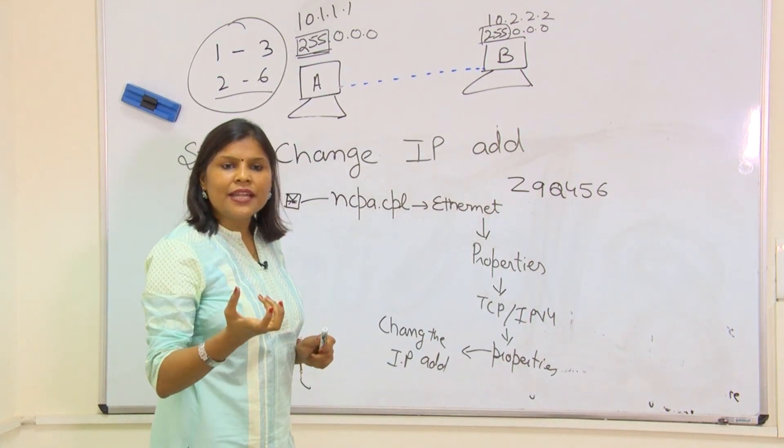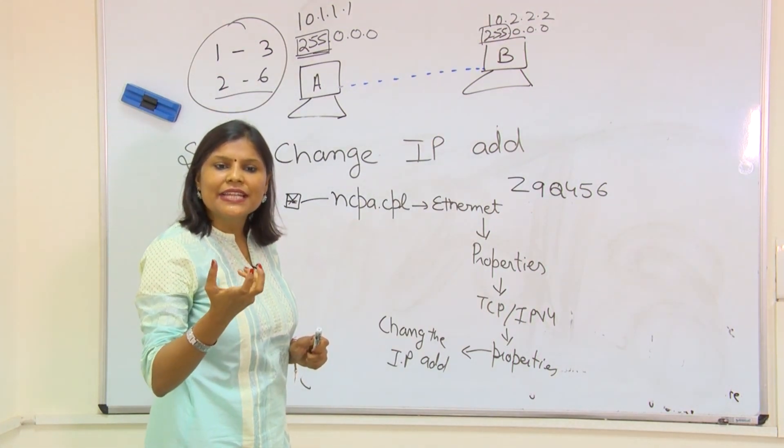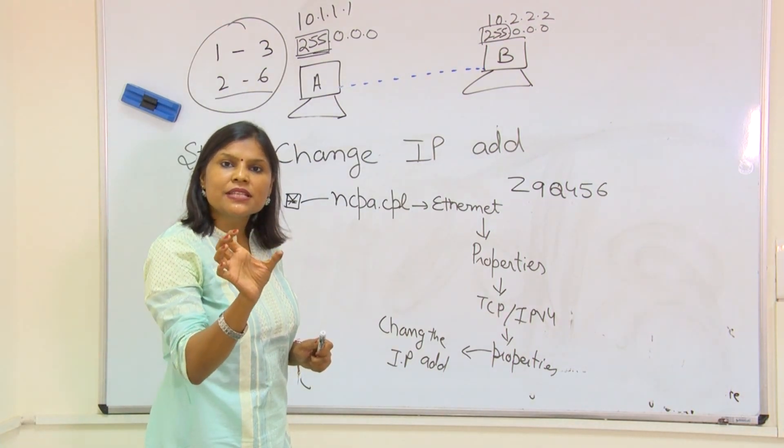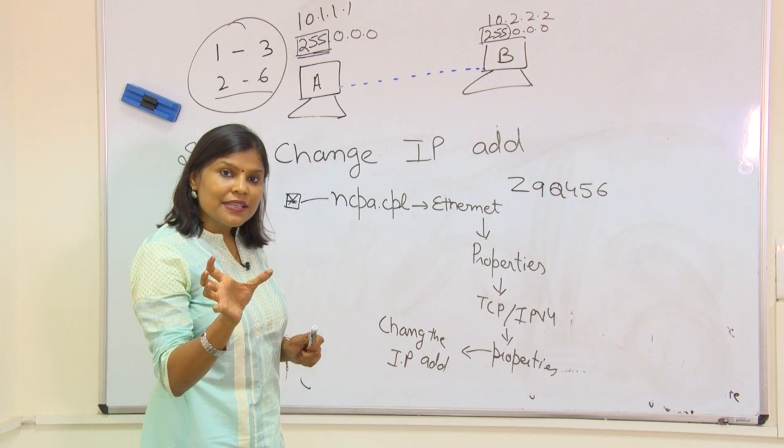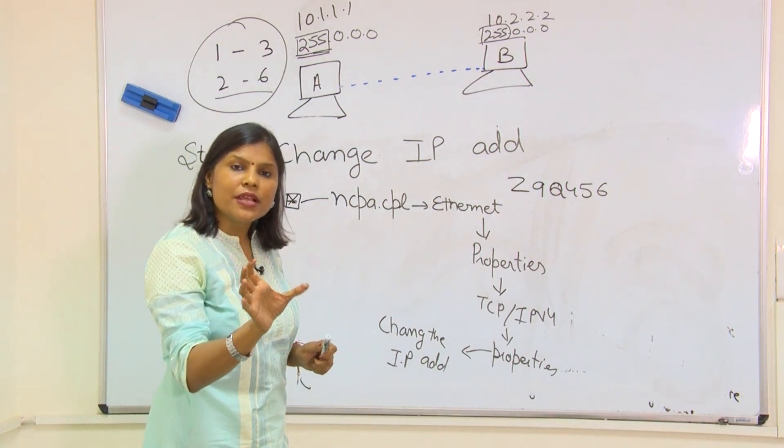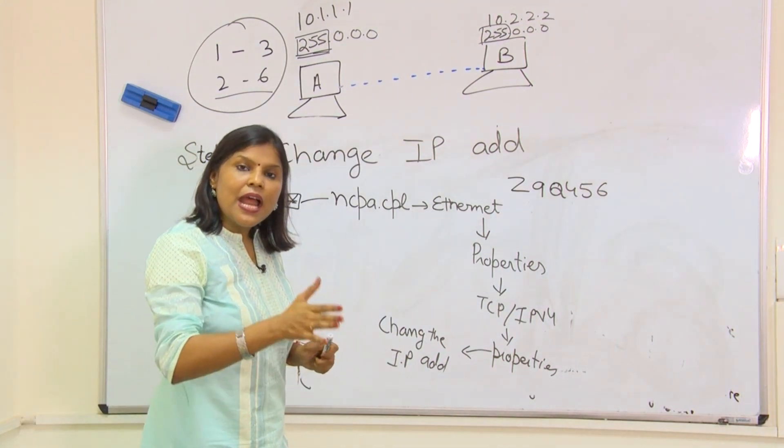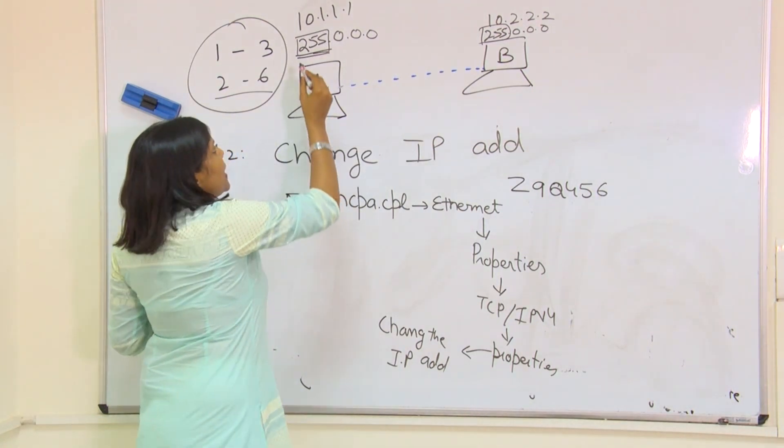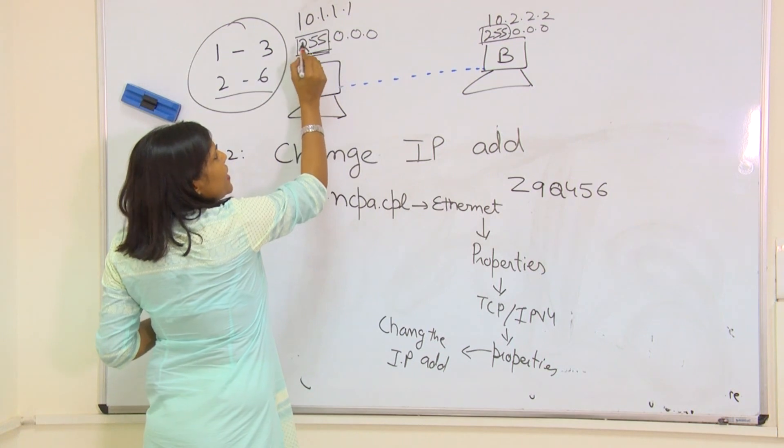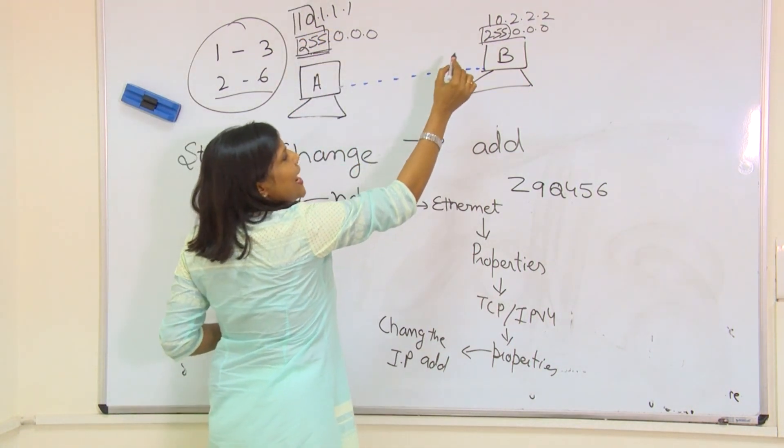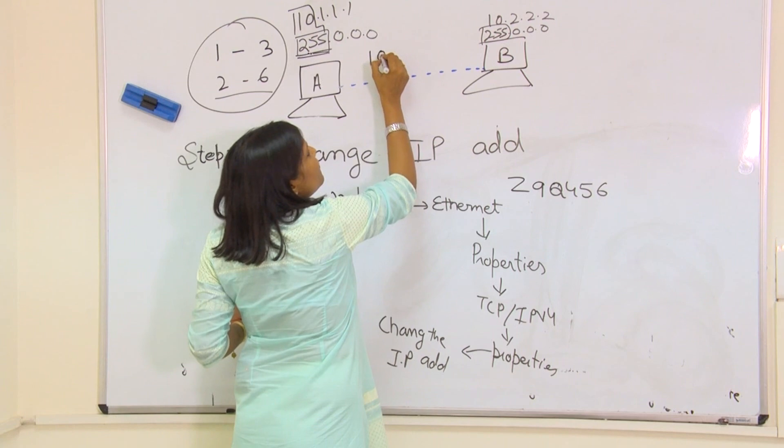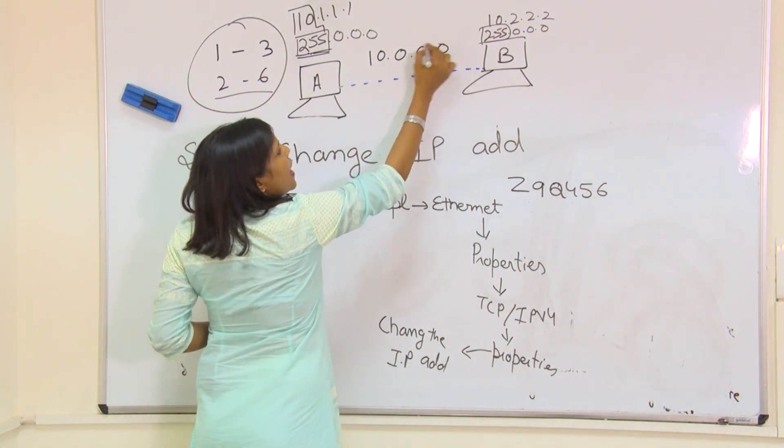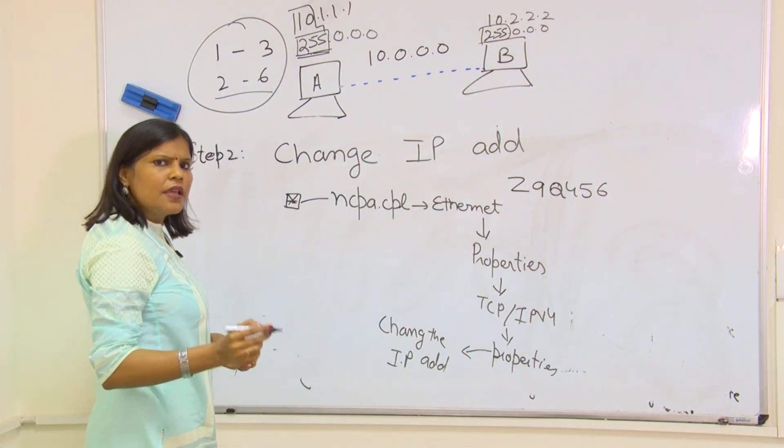Subnet mask is that number or figure that decides which part of the IP address is going to remain fixed - that is, which part of the IP address will become network address and which part will become the host address. 255 is written here below this octet, so that is why the first octet will remain fixed and this will become our network address.